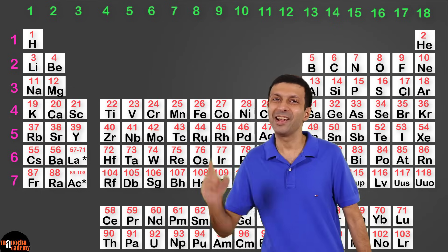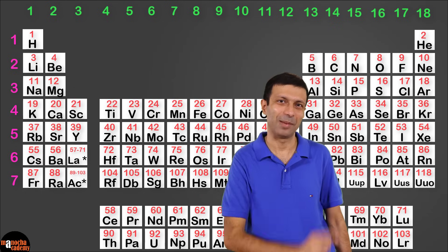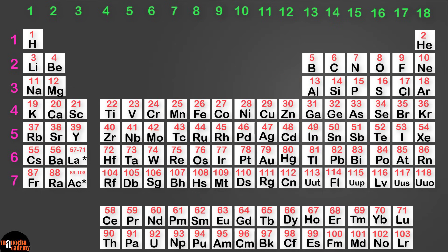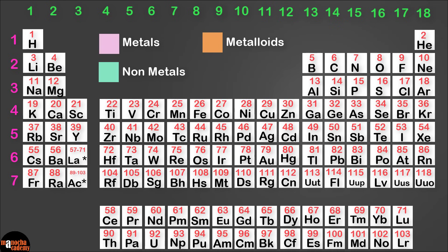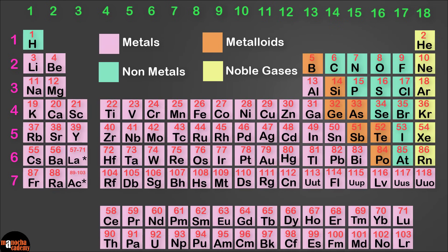So are you ready to start coloring our periodic table? First, let's color the four broad categories of elements: metals, non-metals, metalloids and noble gases. Now our periodic table looks more colorful.